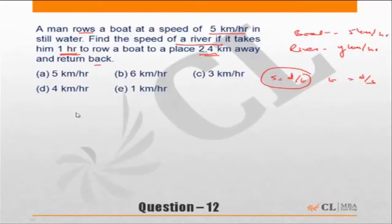So the distance in one direction is 2.4 kilometers. And if he is going upstream, which means against the stream, the speed will be 5 minus y. For the reverse journey, downstream, it's 2.4 upon 5 plus y.